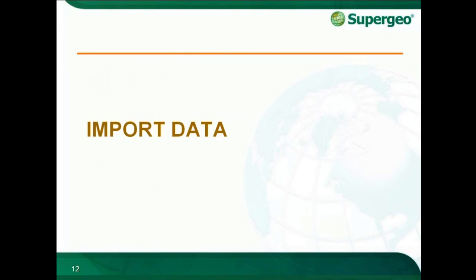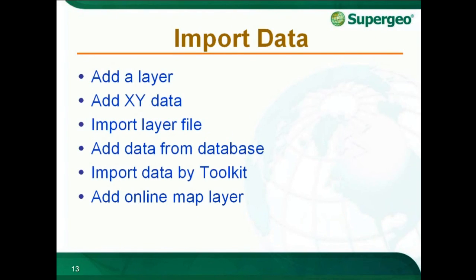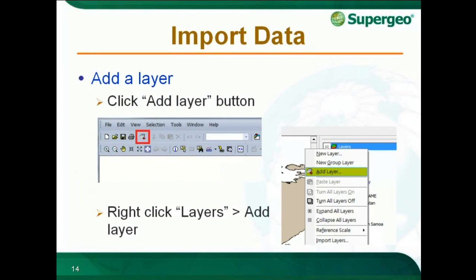Now, how to add data will be introduced. There are several ways to add data into SuperGIS Desktop. First, adding a layer — users can add vector data, raster data, or CAD data by clicking the Add Layer button in the Standard Toolbar. Or you can right-click Layers in Data Content and click Add Layer.